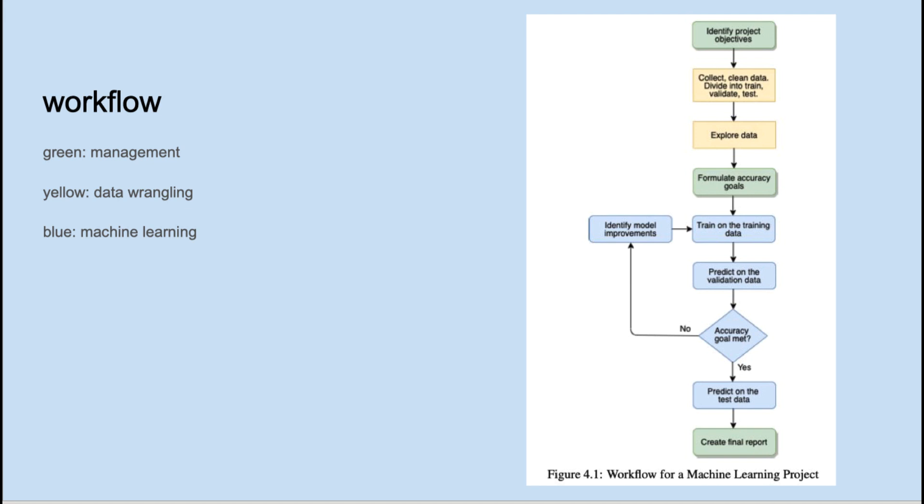The first step after establishing project goals is data wrangling. Collecting data, even within a company, can have to go through many steps of approval. Then once the data is collected, it has to be organized, cleaned, and processed in order to be useful for the project. The whole data process can take months. After the data is explored, project accuracy goals can be more realistically set.